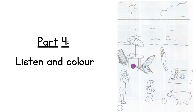Four. There's a man with an ice cream in the picture. Yes. And there's a ball next to him. OK. Colour that ball yellow. Right. A yellow ball next to the man with an ice cream.